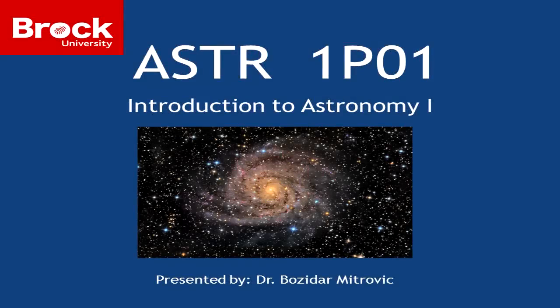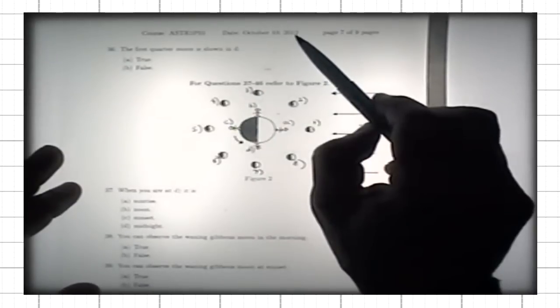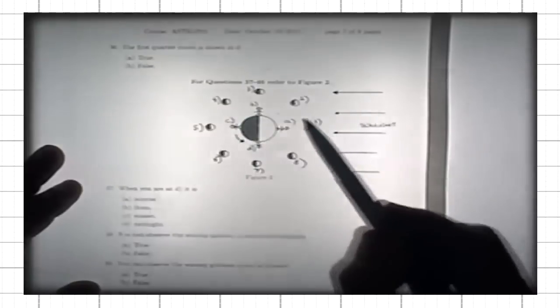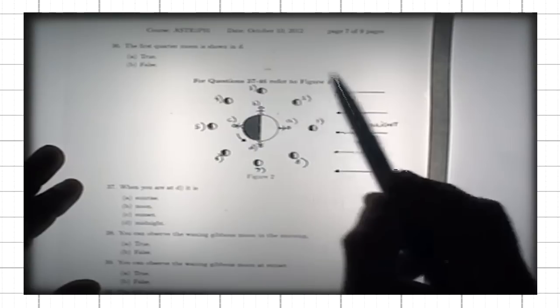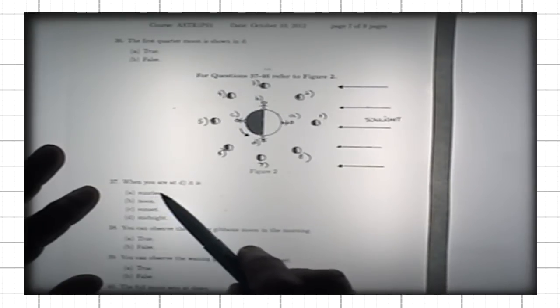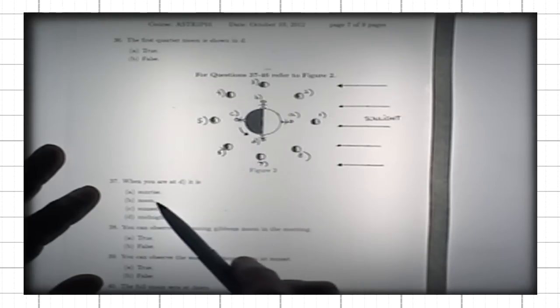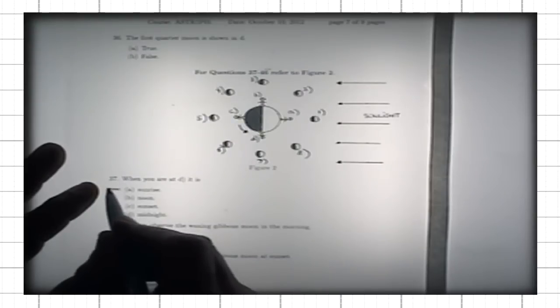Dr. Kjell Anderson: This is figure two from the test from October of last year. Questions 37 to 46 refer to the phases of the moon. Based on what we said so far, question 37: when you are located at D, it is what? Sunrise, noon, sunset, or midnight? The correct answer is A: sunrise.